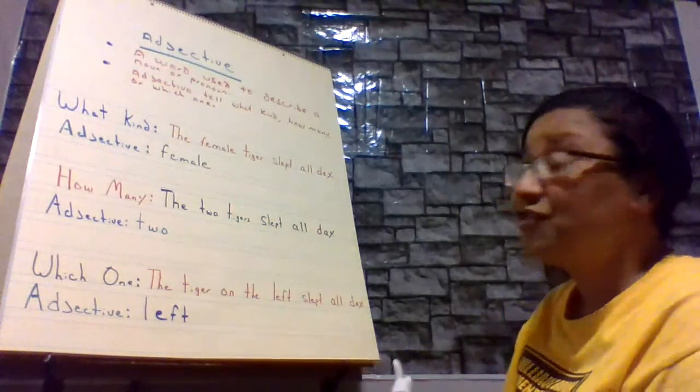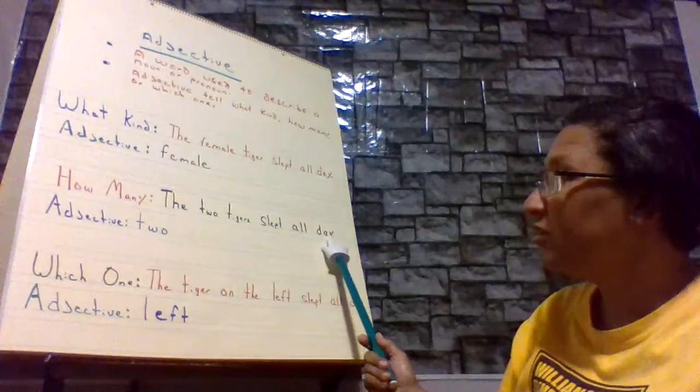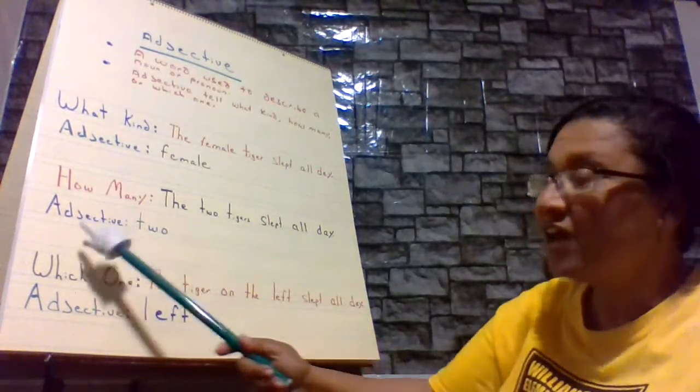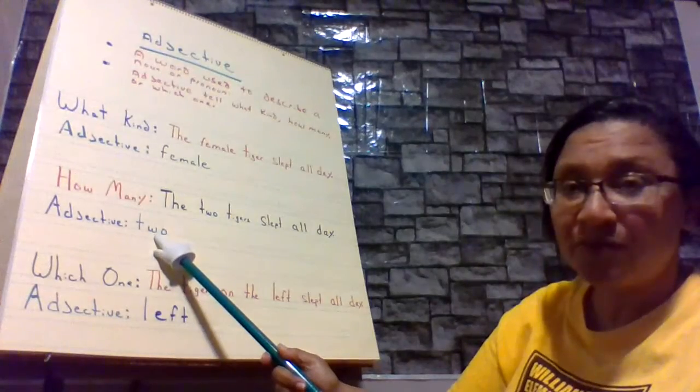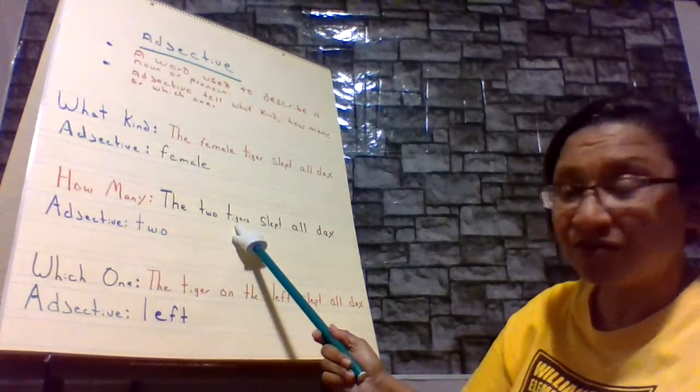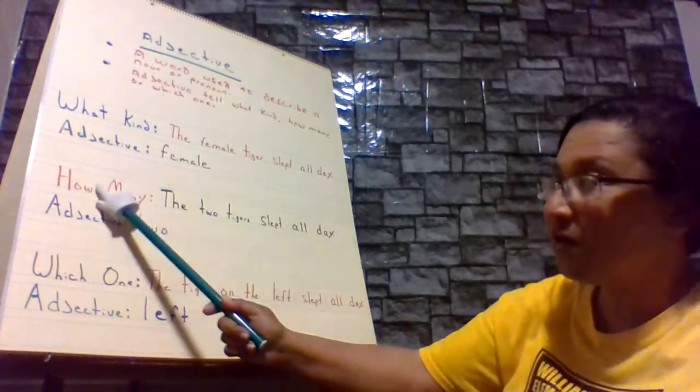How many? The sentence is, the two tigers slept all day. So the adjective in this sentence is two, which represents how many tigers slept all day. This is an example of how many.